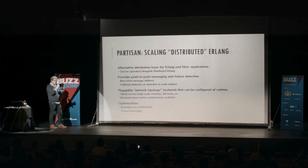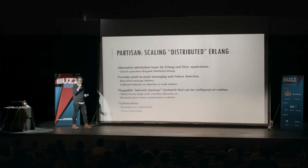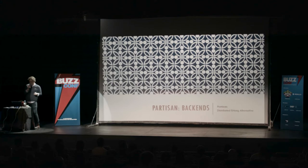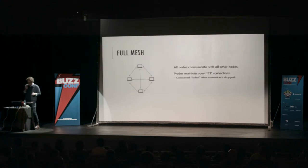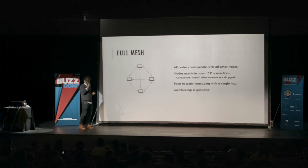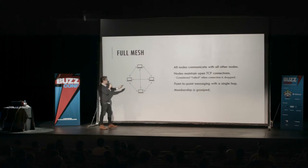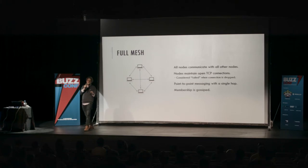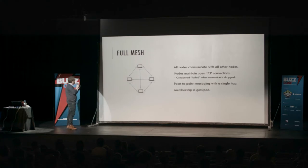The first backend is FullMesh — our reference implementation that looks exactly like distributed Erlang. All tests run using this. The notable difference: membership is gossiped to all nodes using a CRDT. Instead of heartbeating, we maintain active TCP connections; when those drop, we consider that a failure. This is more efficient than the heartbeating technique. The major difference is we did it as a library rather than writing C code in the runtime.